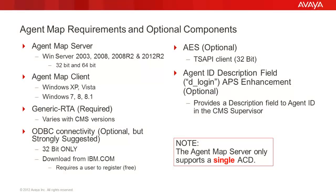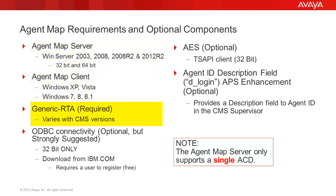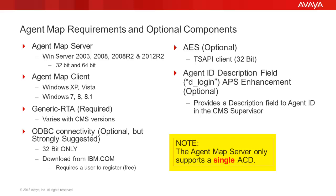AgentMap has two required components: an AgentMap server and an AgentMap client. The AgentMap server takes the generic RTA feed from a CMS or IQ server that provides real-time agent status, and optionally an ODBC connector to that same datastore for the details of the agent's skills and vectors. An AgentMap server only monitors a single ACD. If there is more than one ACD on a CMS or IQ server, a separate AgentMap server will be required for each.